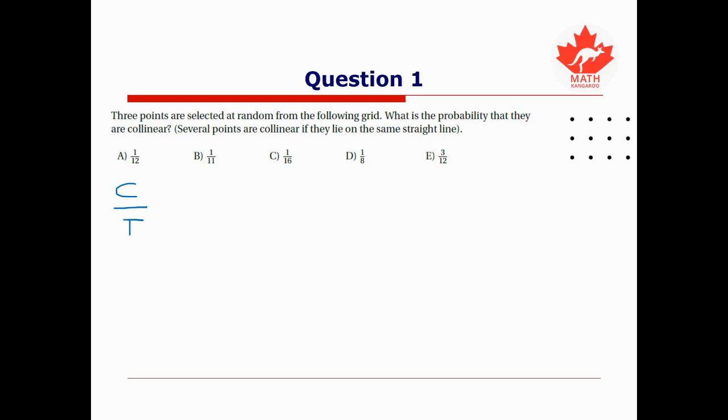Usually computing the total number is easier, and I like to start with that when working on these sorts of problems. So for the total number, we're choosing three points out of a possible 12, and it doesn't matter which order we choose them in. Any different order of choosing three points produces the same three points. So we can compute this as 12 choose 3.